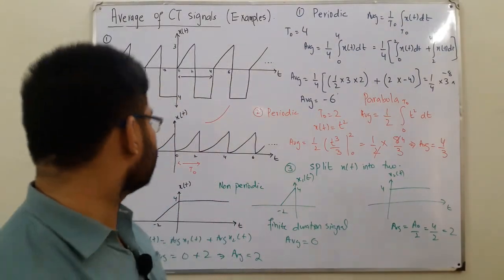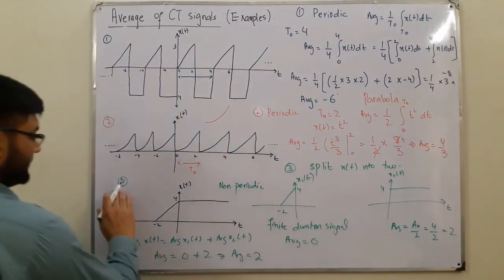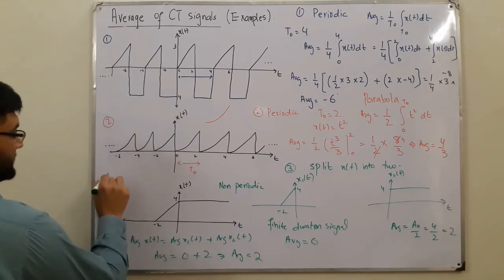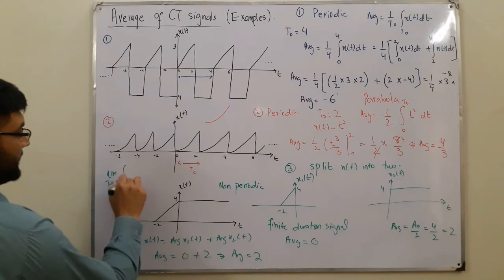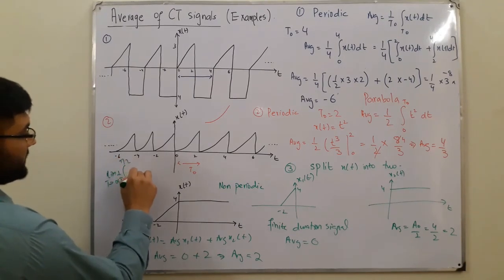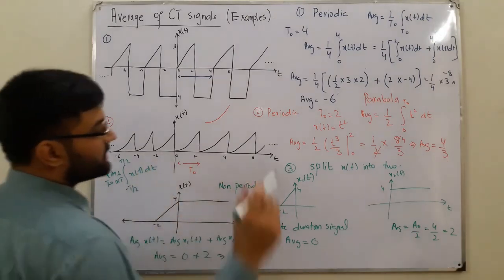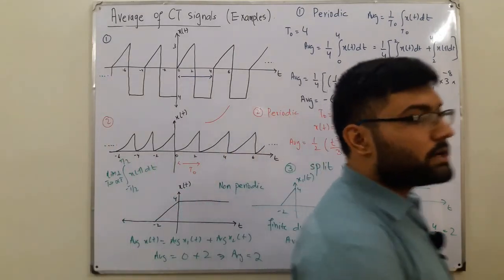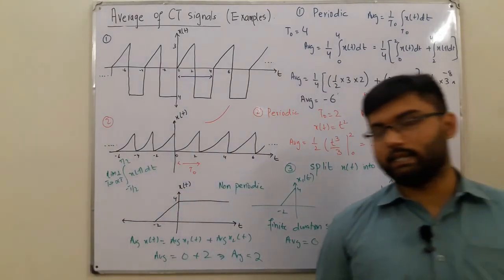You can also do it in your conventional approach, which is like this. For a non-periodic signal, you have limit t approaching infinity, 1 over t, negative t by 2, positive t by 2, x of t dt, whatever you like. I wanted to show you an easy alternative for that.